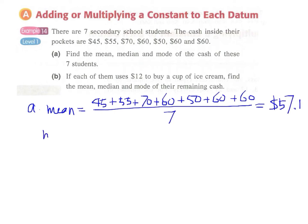And for the median, we have to arrange the numbers in ascending order first. For example we have 45 and then 50. Next will be 55 and we have 3 60s here and the largest one is 70.